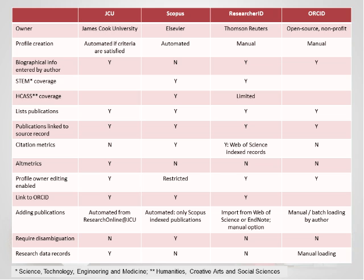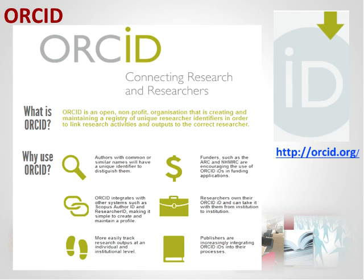Hello, everyone. ORCID, which is an acronym for Open Researcher and Contributor ID, is a global non-profit registry which provides researchers with a unique alphanumeric identifier — their ORCID ID — plus a mechanism for linking their research outputs to these identifiers. With over 1.5 million IDs already created, it's shaping up to be the 'uber identifier' for scholars. I think all scholars are going to need an ORCID ID.